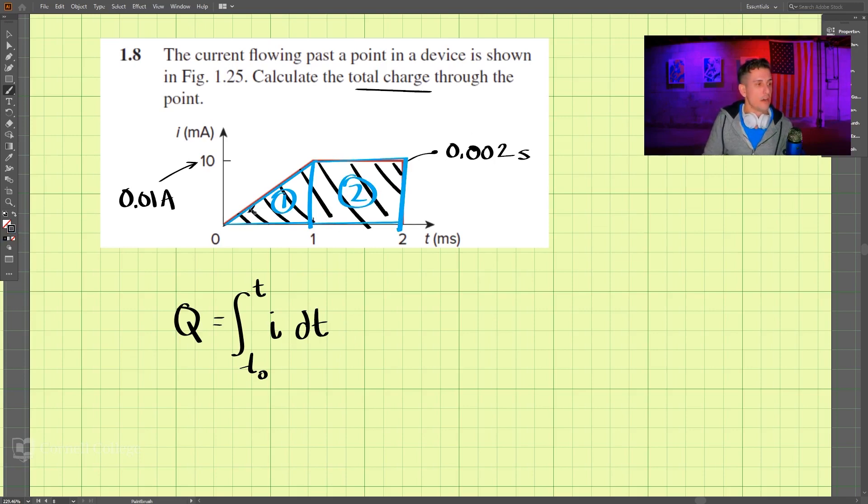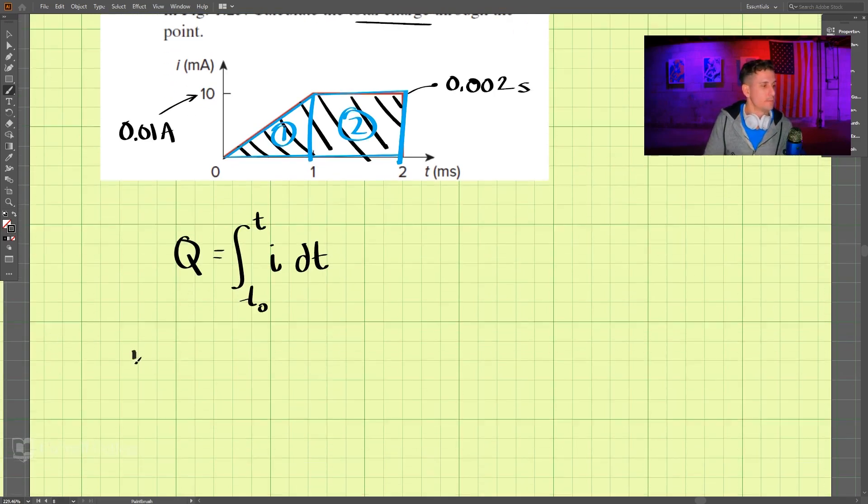The area of this triangle, for one, we have one half times the one millisecond, which is 0.001, that's this distance here, times this height here, which is 0.01 amps. And so that's for one,